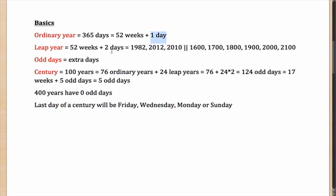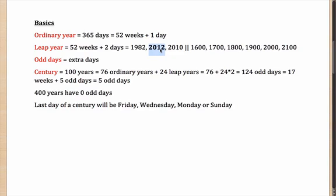It is important to identify which year is a leap year. Any year divisible by 4 is a leap year. For example, 1982: to check divisibility by 4 you just look at the last two digits. The last two digits are 82, and since 82 is not divisible by 4, 1982 is not a leap year. For 2012, the last two digits are 12, which is divisible by 4, so 2012 is a leap year — and indeed 2012 had a 29th of February. 2010 is not a leap year because 10 is not divisible by 4.